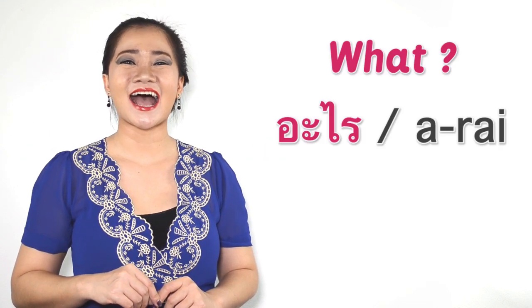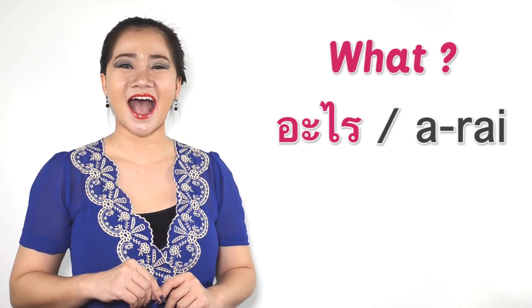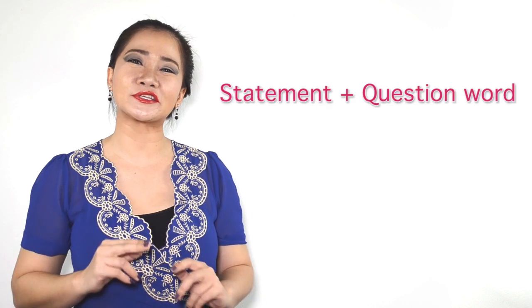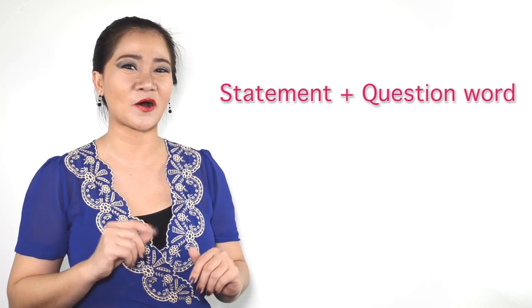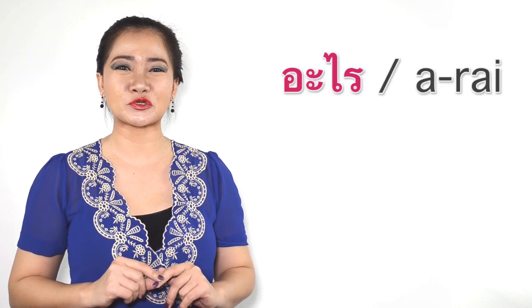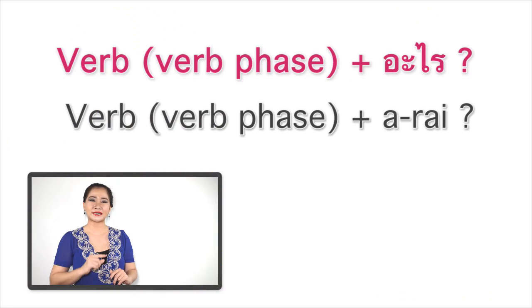In Thai, we say อะไร. I would like to remind you that Thai question words are at the end of the sentence, unlike in English. To ask this question word อะไร, you still need to use the verb. So, verb plus อะไร. You use อะไร at the end of your question. Let me show you how.